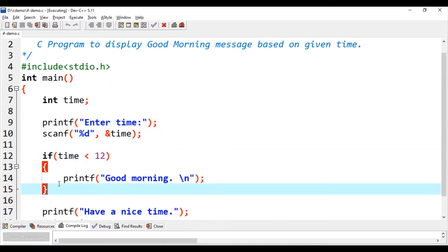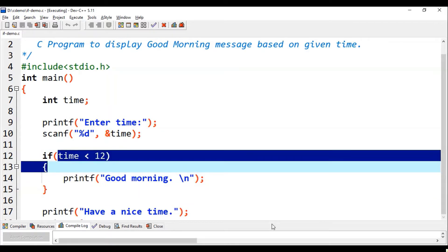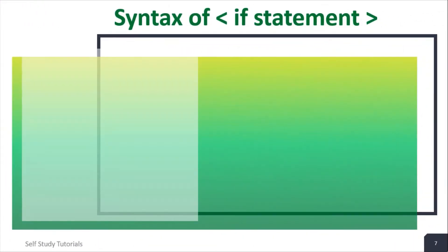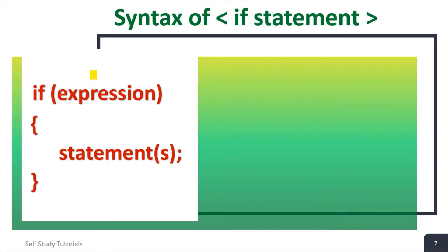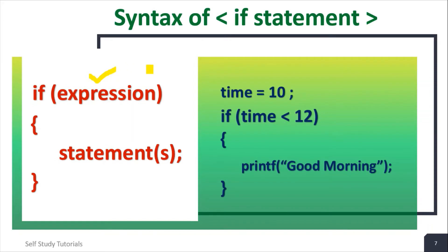Let's talk about the basic syntax of the if statement. 'if' is a reserved keyword, followed by an expression. Between the curly brackets we write the statements that we want to execute when the expression is evaluated to true. In the example, the time variable has value 10. Since 10 is less than 12, the expression is true and the printf statement will be executed.